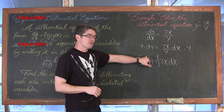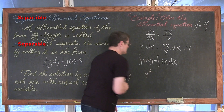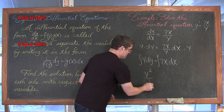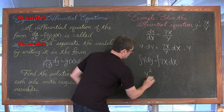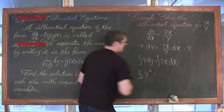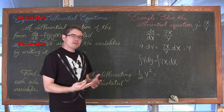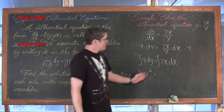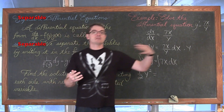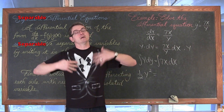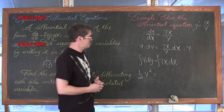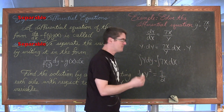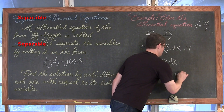Now we are going to take the integral of both sides with respect to the isolated variable. This is pretty straightforward: we have y to the first, raise it to y squared, then divide by that power increased by 1, which is effectively dividing by 2, or multiplying by 1/2. This is indefinite integration so we are finding a general solution. I write plus c only on the right-hand side. On the right, x to the first raised by 1 gives 7/2 x squared plus c.